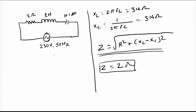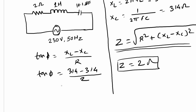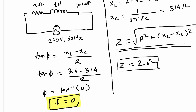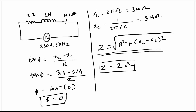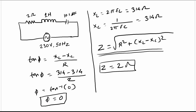We can also identify the phase angle between the circuit current and voltage using: tan φ = (XL − XC) / R. So tan φ = (314 − 314) / 2 = 0, which gives φ = tan⁻¹(0) = 0°. The phase angle between voltage and current is zero, which we have also proved mathematically — confirming that this circuit is operating as a purely resistive circuit.